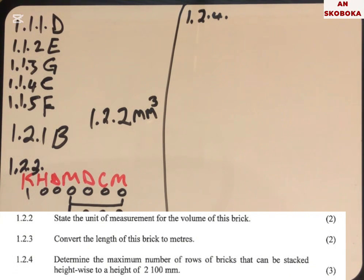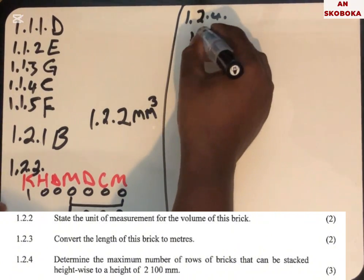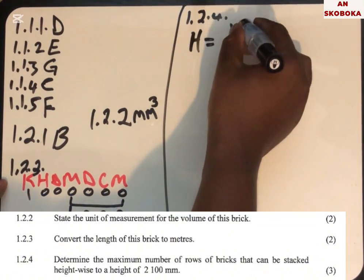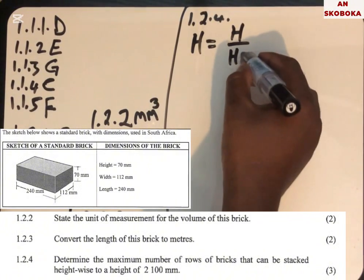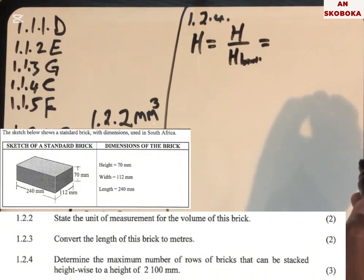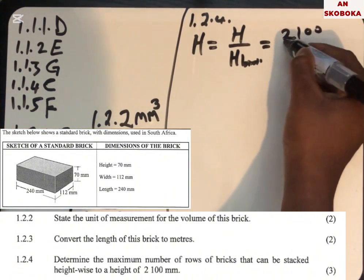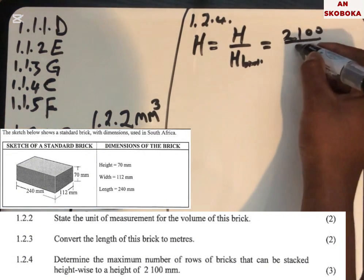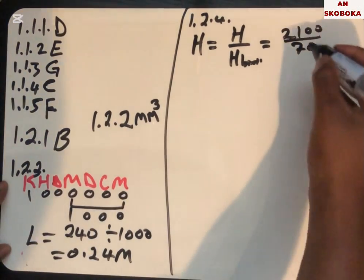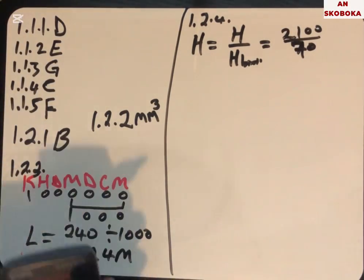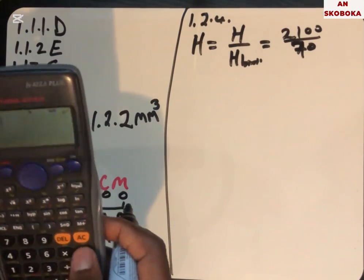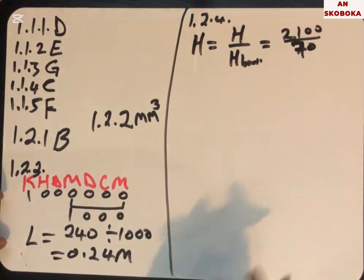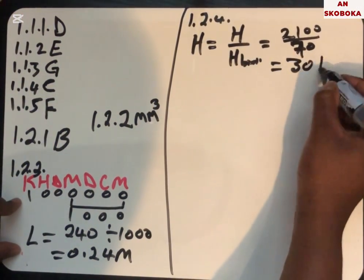Question 1.2.4: determine the maximum number of rows of bricks that can be stacked height-wise to a height of 2100 millimeters. This is a packaging problem. Height-wise rows = total height divided by height of one brick = 2100 divided by 70 = 30 bricks.